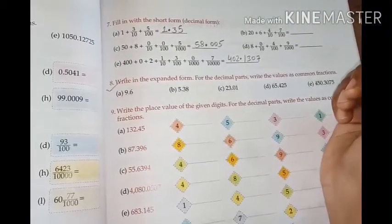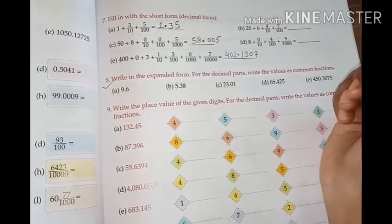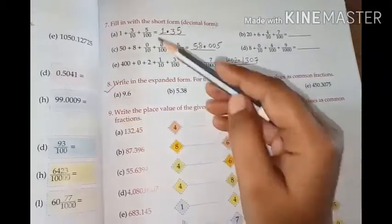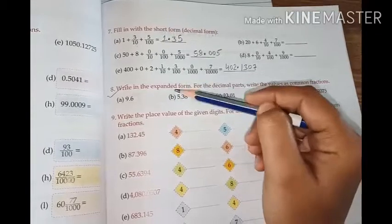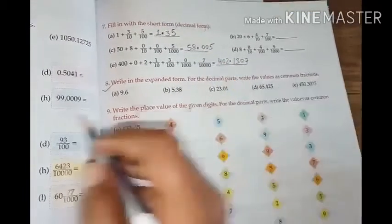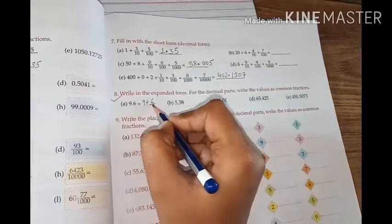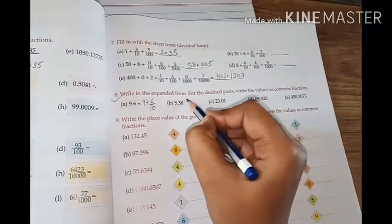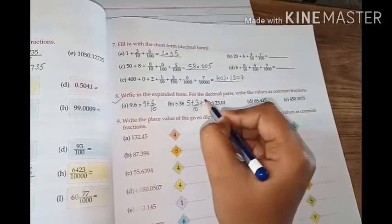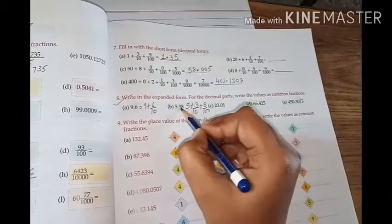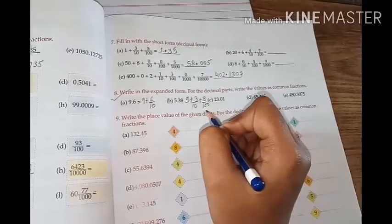Now question number 8. Write in the expanded form for the decimal parts, write the value as common fraction. Common fraction bilkul is tarah se. You have fill in this with the short forms, you have to write this in the expanded form. So they are just vice versa order. 9.6 will be written as 9 plus 6 by 10, kyunki decimal ke baad wo first digit hai. 5.38 will be written as 5 plus 3 by 10 plus 8 by 100. Because 3 is first digit, toh 10 uske niche likhenge. 8 will be the second digit, toh we will write 8 by 100.